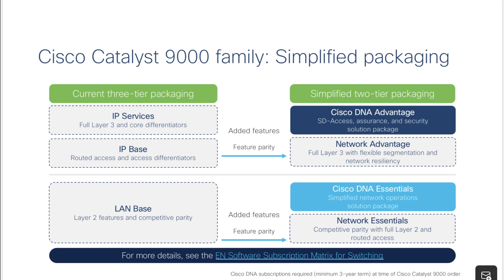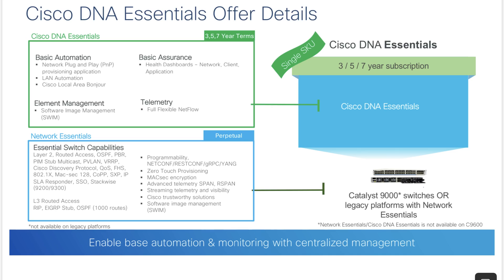Starting with the lower version, the Cisco DNA Essentials: when you buy the switch, you will have the Network Essential within the blue box. This is perpetual, meaning this is the functionality the switch will have forever. You will not lose any of the blue-box features even if you don't have an active subscription on the switch. The switch will still be able to do VLANs, QoS, etc. — you don't need a subscription for that, and that's really important to understand.